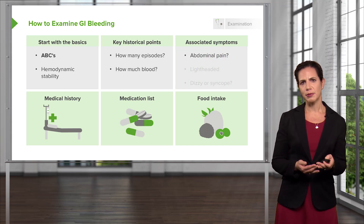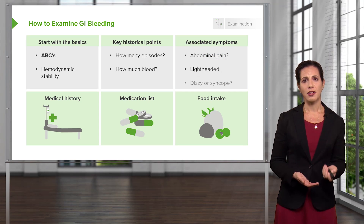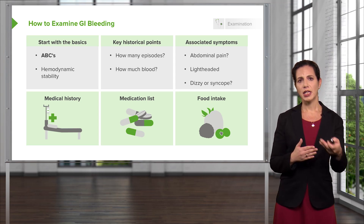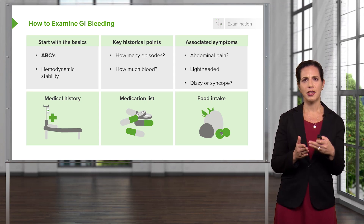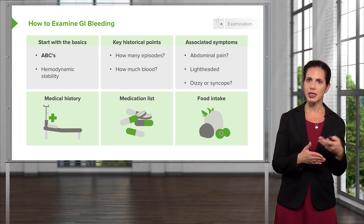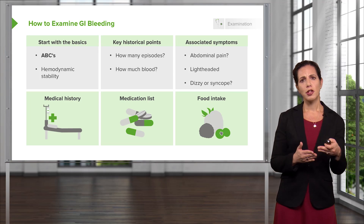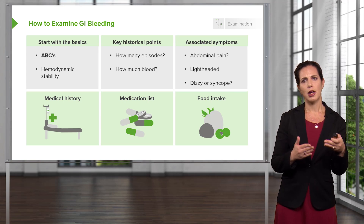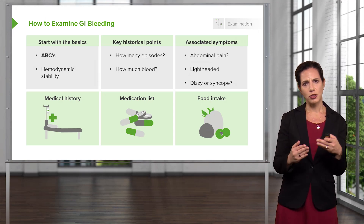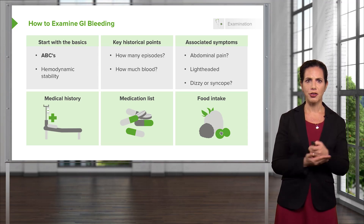Another thing to consider are associated symptoms. Is the patient having abdominal pain? Are they feeling lightheaded, dizzy, or did they have a syncopal episode? A syncopal episode may indicate more acute blood loss, while the absence of those symptoms might indicate the patient is more hemodynamically stable. Belly pain can be associated with perforation — for an upper GI bleed, a peptic ulcer can actually perforate, creating a hole in the stomach associated with significant abdominal pain.